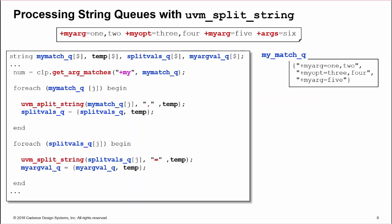One option for processing strings or queue elements is to use UVM split string. This allows us to split a single string on a specific character and write the split strings into a queue. So we use getArgMatches to write all arguments beginning with plus my into myMatchQueue.